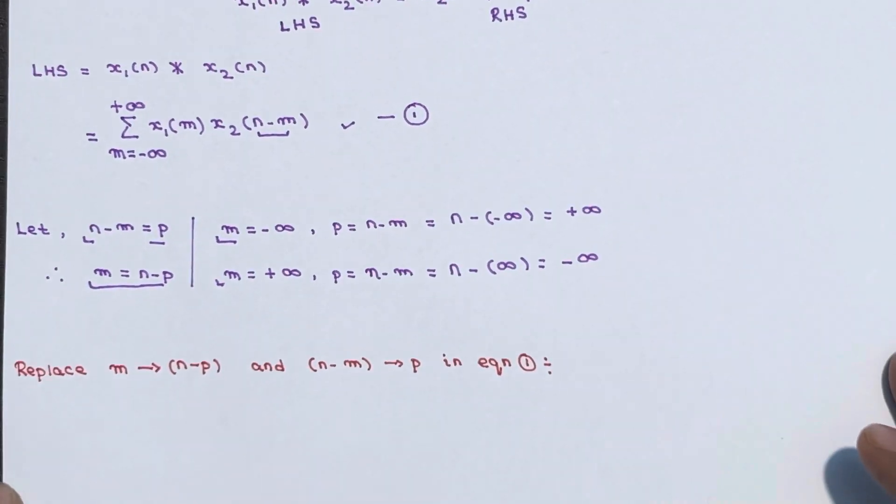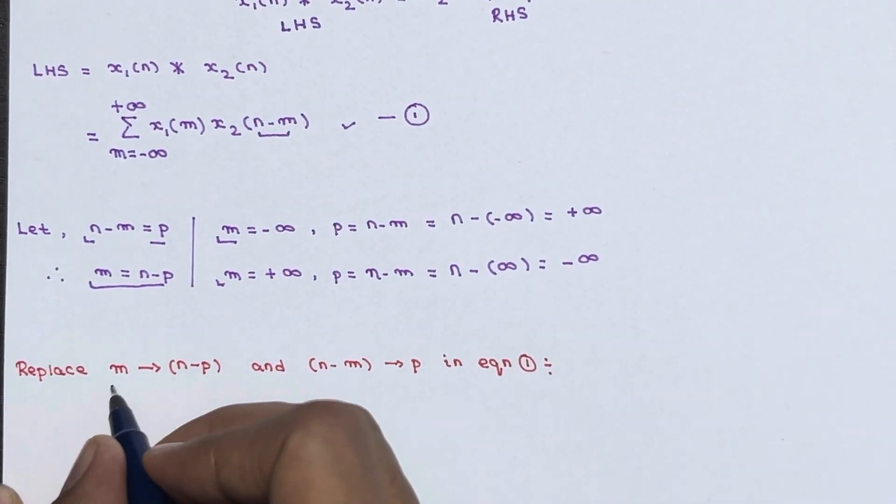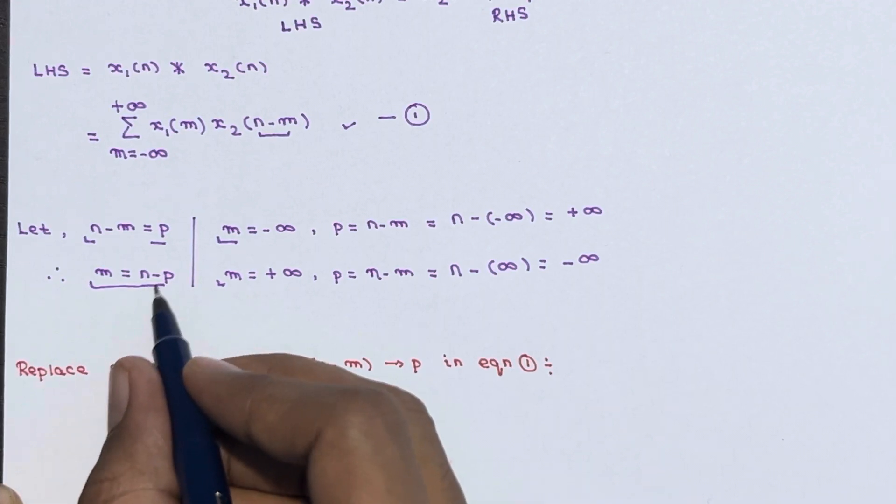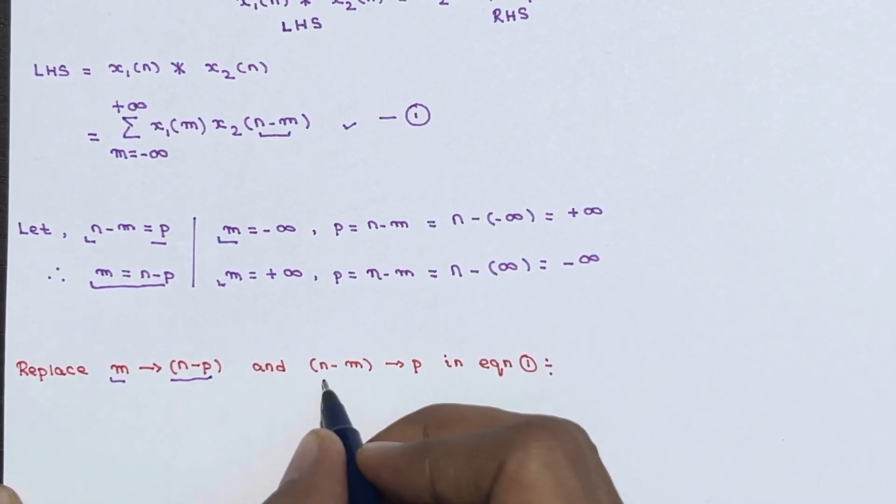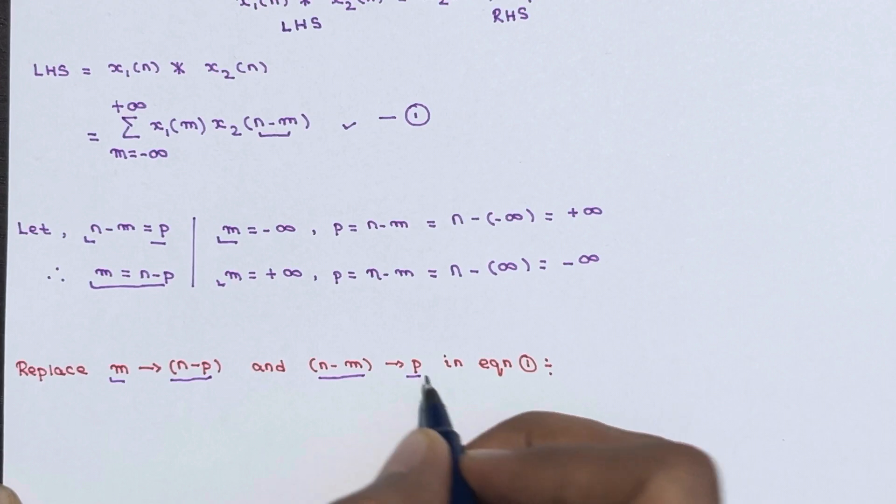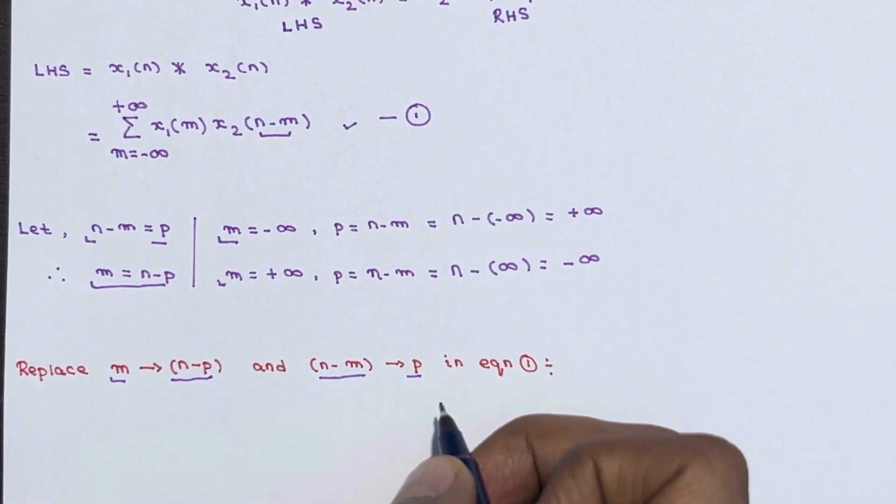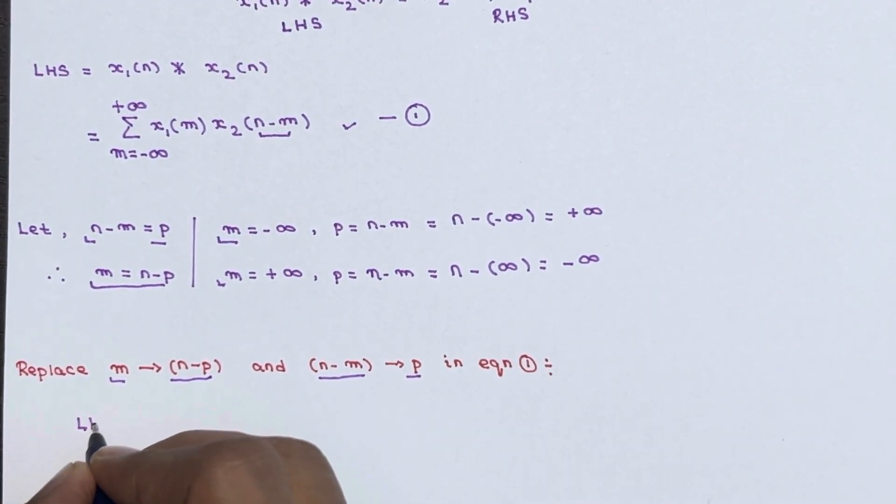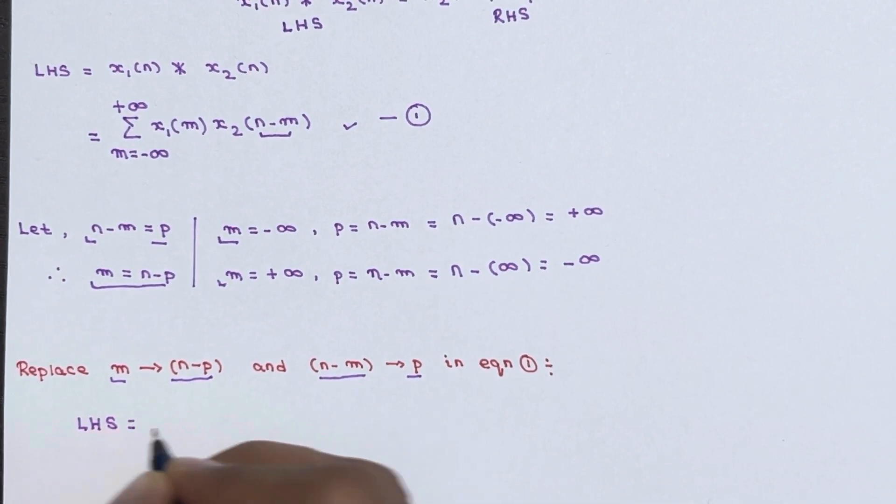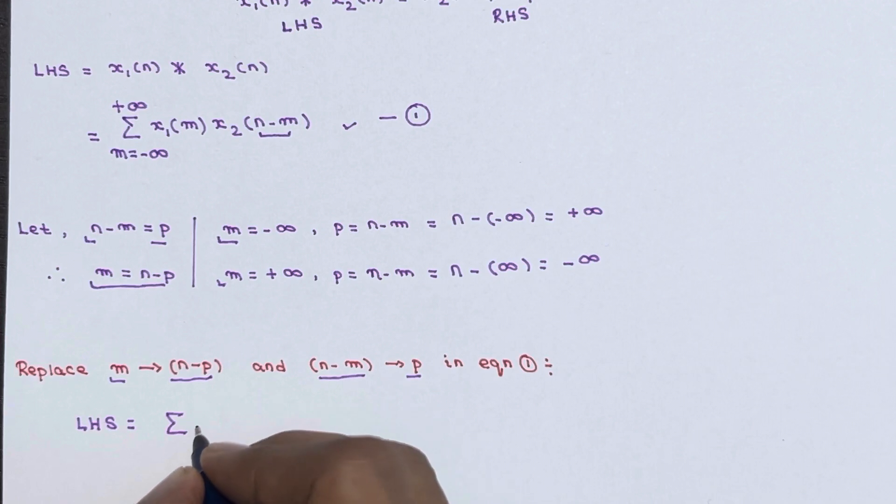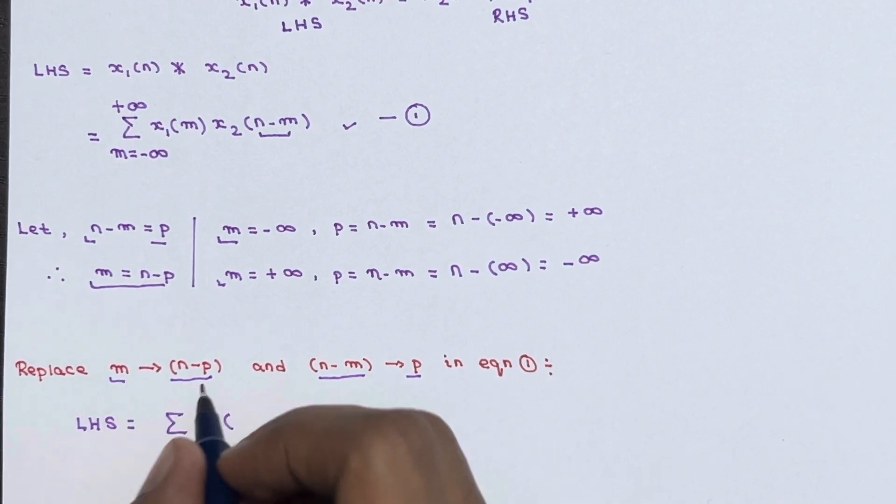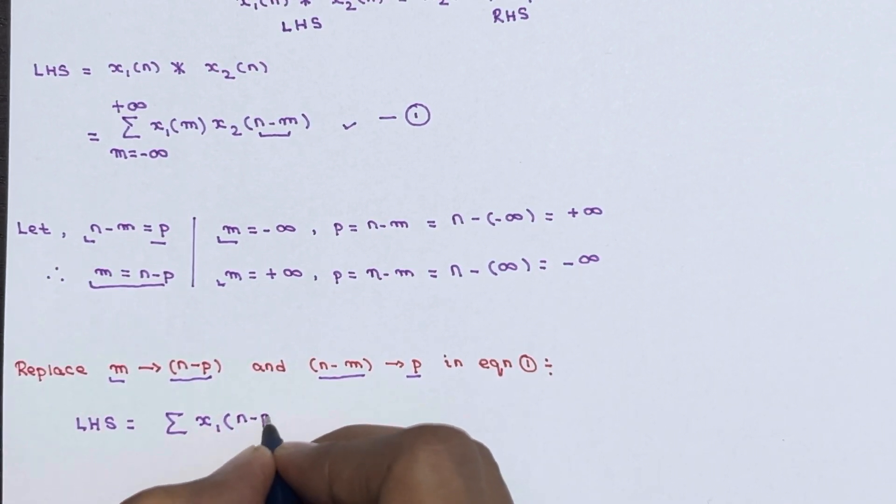So in equation number one replace m with n minus p and n minus m with p. Then your equation number one becomes LHS equals summation of x1 of, in the place of m you have to keep n minus p.